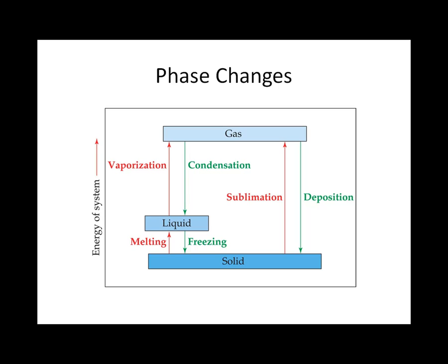But what about the other states of matter? It turns out that intermolecular forces also affect the transitions between the different phases or states of matter. There are three different states of matter: solid, liquid, and gas. When we change from one state to the next, we call this a phase change. Between the three different states, there are six different phase changes, and they all have their own special names.